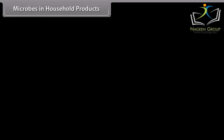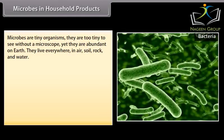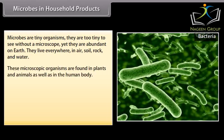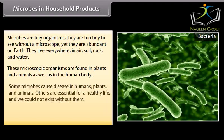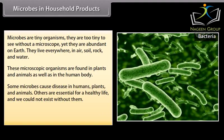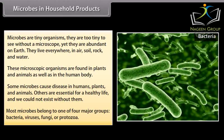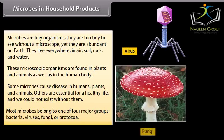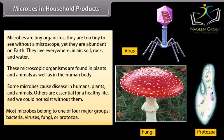Microbes in household products. Microbes are tiny organisms — too tiny to see without a microscope, yet they are abundant on earth. They live everywhere: in air, soil, rock, and water. These microscopic organisms are found in plants and animals as well as in the human body. Some microbes cause diseases in humans, plants, and animals; others are essential for a healthy life and we could not exist without them. Most microbes belong to one of four major groups: bacteria, viruses, fungi, or protozoa.